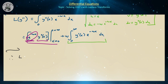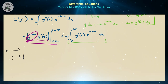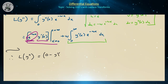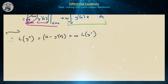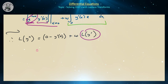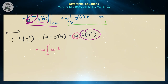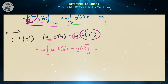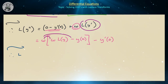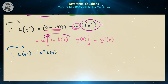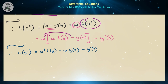Therefore, the Laplace transform of y double prime equals 0 minus y prime of 0 plus omega times the Laplace transform of y prime. Substituting our known expression for L{y prime} and distributing omega gives: the Laplace transform of y double prime equals omega squared times L{y} minus omega times y of 0 minus y prime of 0. This introduces our second initial condition.